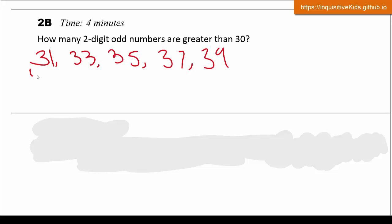So in every 10, for example, 30 to 39 has 5 odd numbers. And then we have the 40s, the 50s, the 60s, the 70s, the 80s, and the 90s.